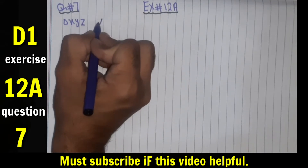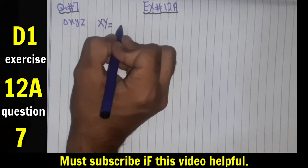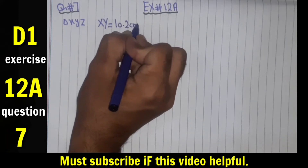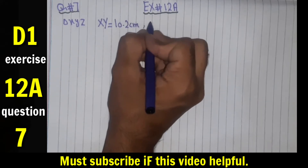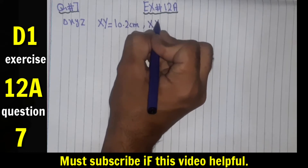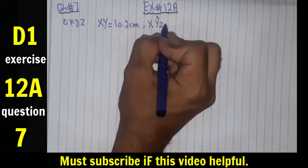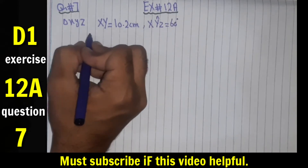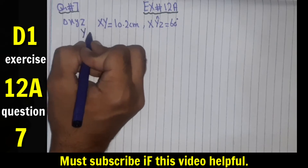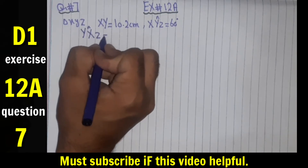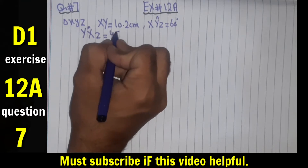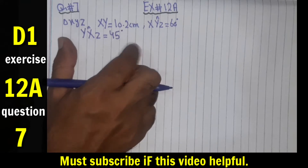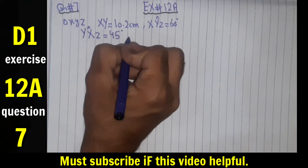The length given is XY which is equal to 10.2 centimeters. The angle given is angle XYZ which is equal to 60 degrees, and the other angle given is angle YXZ which is equal to 45 degrees. We have to construct this triangle XYZ and then measure the length of XZ which is unknown.